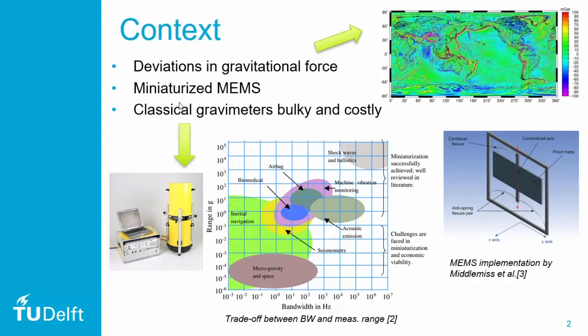Since we are considering accelerometers, there is typically a relation between the measurement range and the bandwidth. For high sensitivity accelerometers, the resonant frequency in mass-spring systems is typically low. This low resonant frequency comes with high sensitivity but results in a low measurement range, because in a MEMS device we cannot allow for as much deflection as we would want.